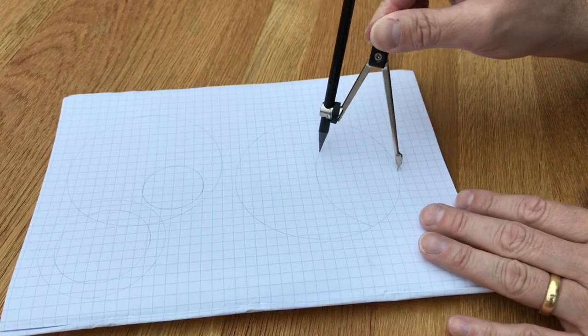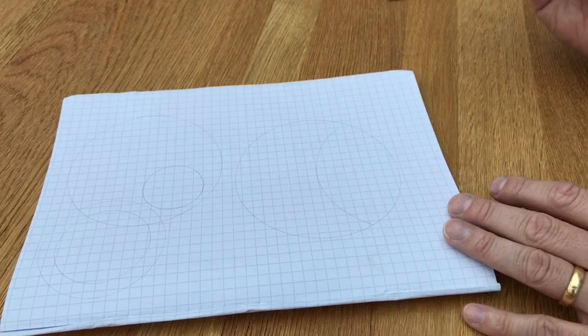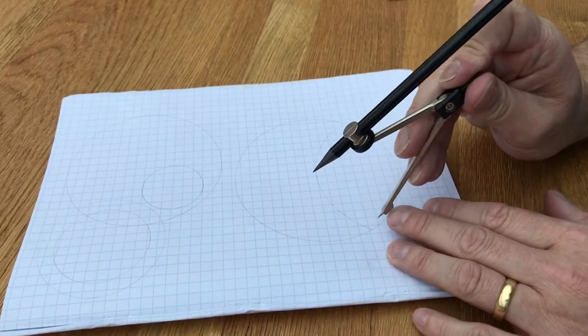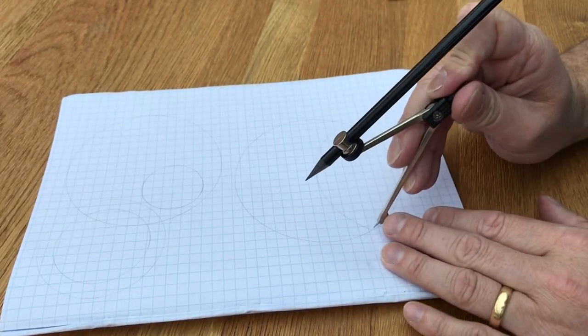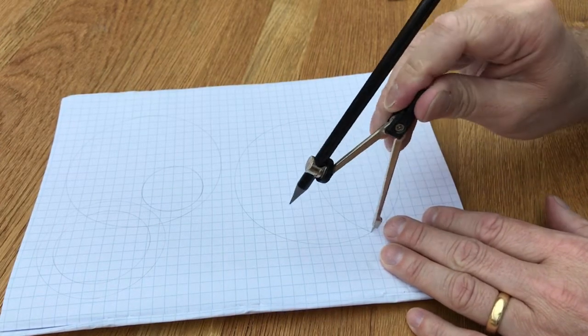Then I'm just going to draw an arc from one side of the circle to the other. Looks a bit like a sad face at the moment. Then I move along, put the point of my pair of compasses on the point where the arc I've just drawn intersects with the circumference of the circle.